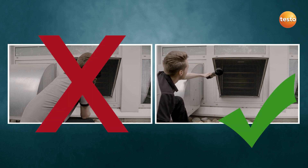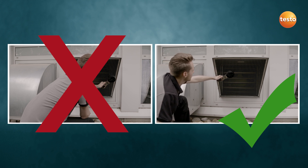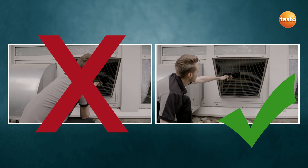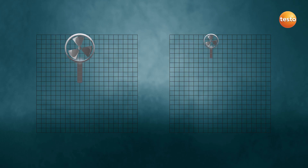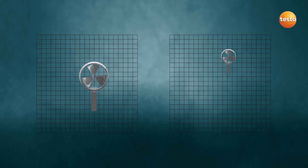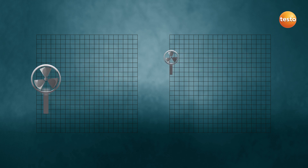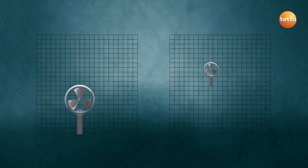The best method is to move the vane across the grill surface at a distance of 5 cm. Vanes with 100 mm diameter are better suited to measuring than instruments with smaller vanes, as the flow values are integrated and averaged over a larger area.